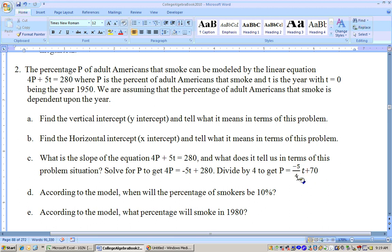This is the slope right here of negative 5 fourths, and that means that every 4 years, the percentage of people smoking drops by 5%.